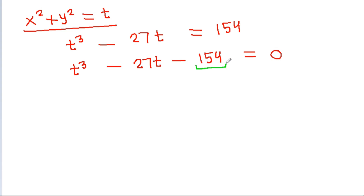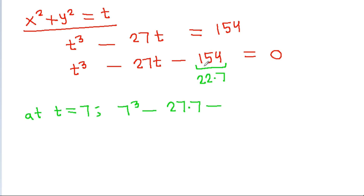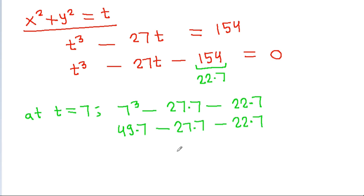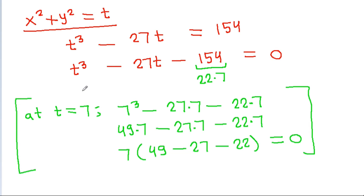Since 154 is 22 times 7, we test t equals 7: 7 cubed minus 27 times 7 minus 22 times 7. Taking 7 common gives 49 minus 27 minus 22, which equals 0. That means t minus 7 is a factor of this cubic equation.